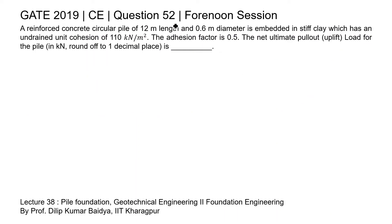This is question 52 of the civil engineering paper of GATE 2019 forenoon session. A reinforced concrete circular pile of 12 meter length and 0.6 meter diameter is embedded in stiff clay, which has an undrained unit cohesion of 110 kilo Newton per meter square. The adhesion factor is 0.5. The net ultimate pullout load for the pile is to be determined.